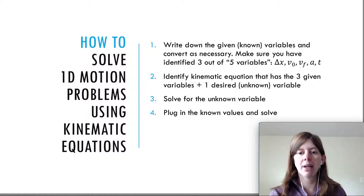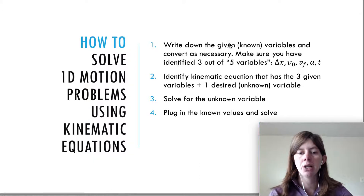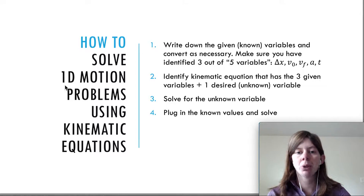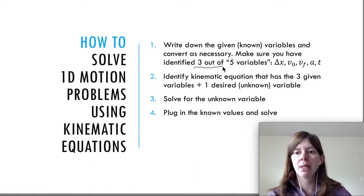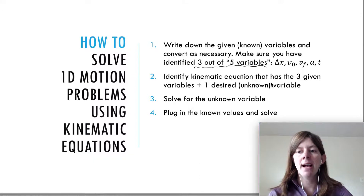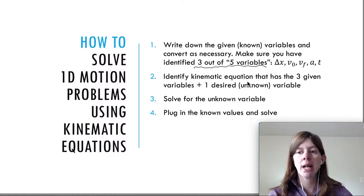Here are the steps to solve problems. First, it must be a constant acceleration problem — acceleration does not change throughout, and right now we're dealing with one-dimensional motion. Write down your given variables and convert them to SI units as necessary. Once you've identified three out of five variables and the variable you're looking for, step two is to find the kinematic equation that has those three given variables plus the unknown. Step three: solve for the unknown variable. Then plug in the numbers and solve at the last step.